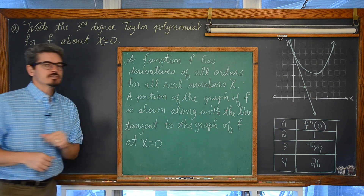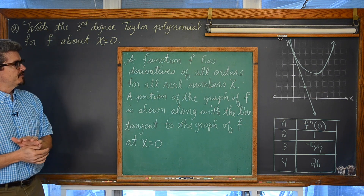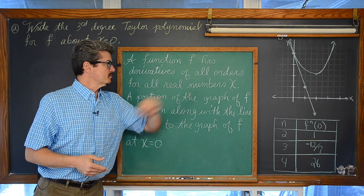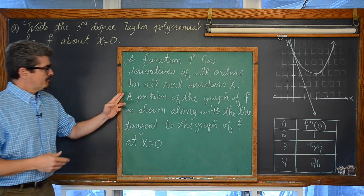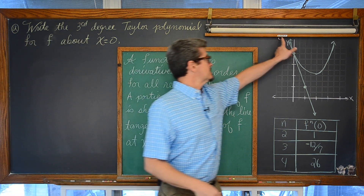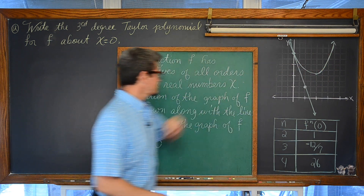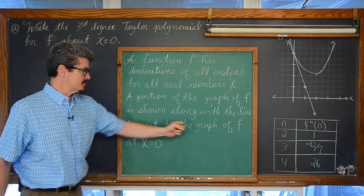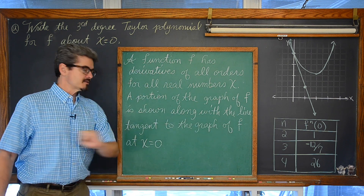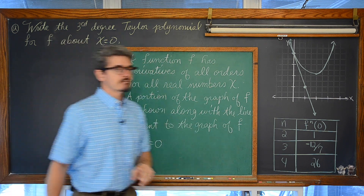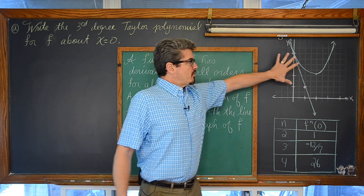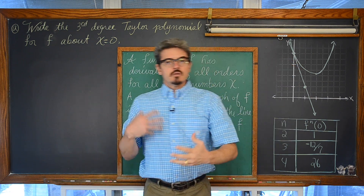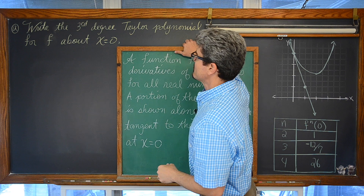Our question here says a function f has derivatives of all orders for all real numbers x. A portion of the graph of f — this graph right here that is concave up — is shown along with the line tangent to the graph of f at x equals zero. We are going to be pulling information off this graph and this table as we go through the four parts.